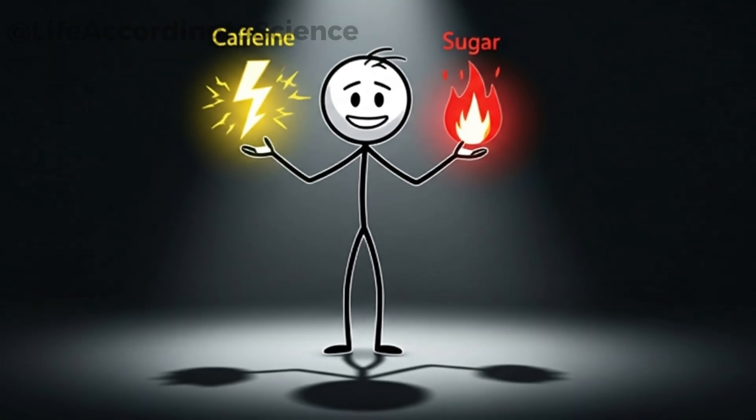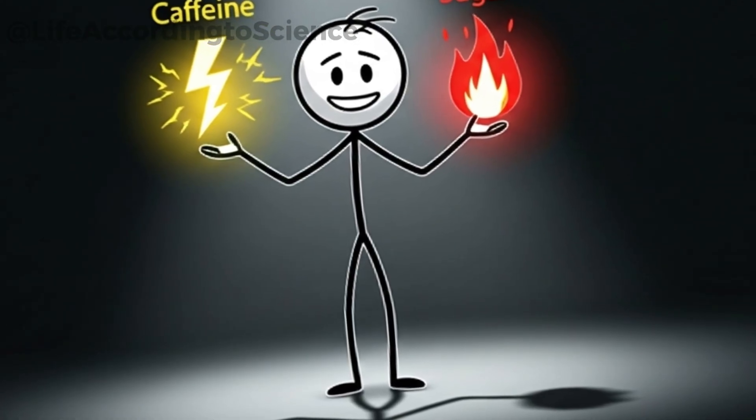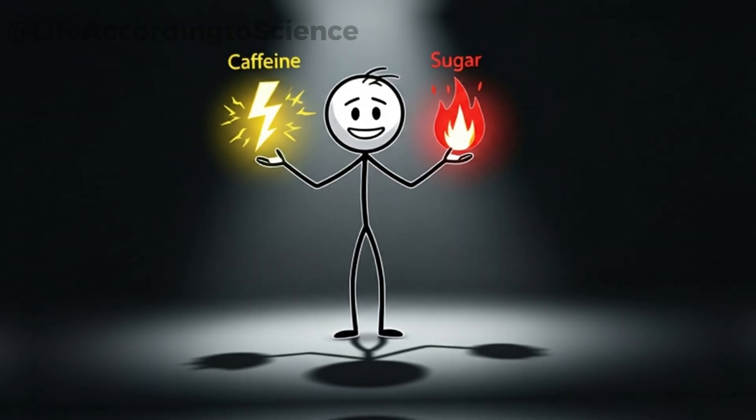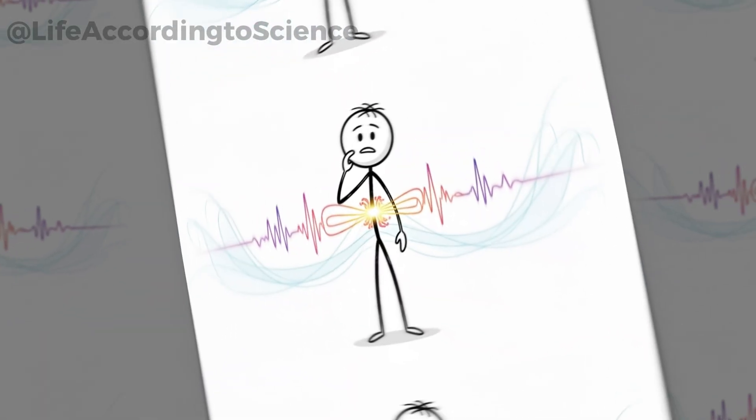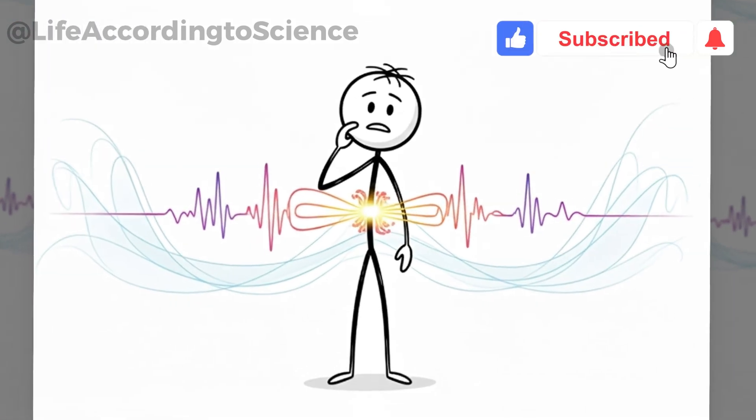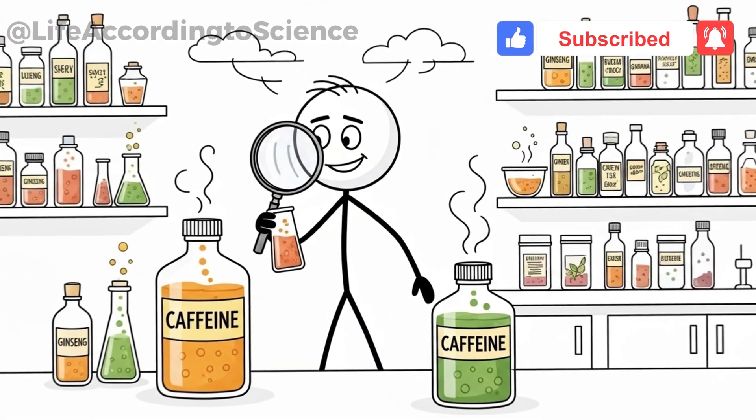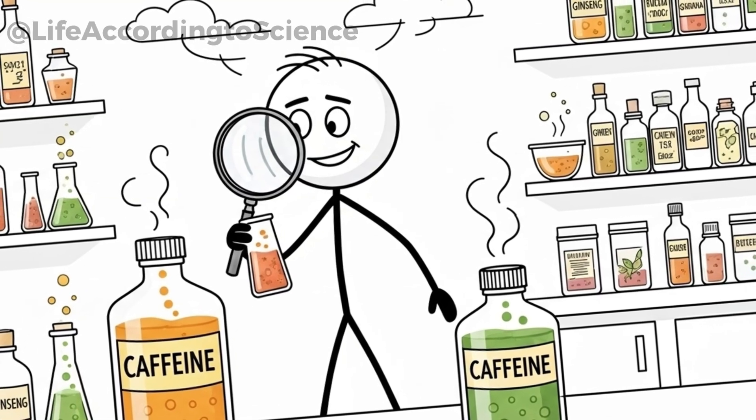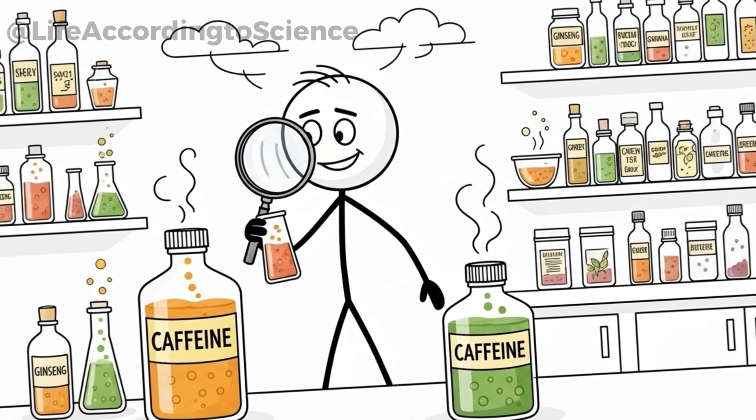Caffeine, the most famous one, is a central nervous system stimulant. Sugar provides a quick burst of calories for instant energy. Taurine, although less understood by the general public, is linked to cardiovascular and nervous system function. Then come the extras, ingredients marketed as natural boosters, even though their actual effects are often minor compared to caffeine.